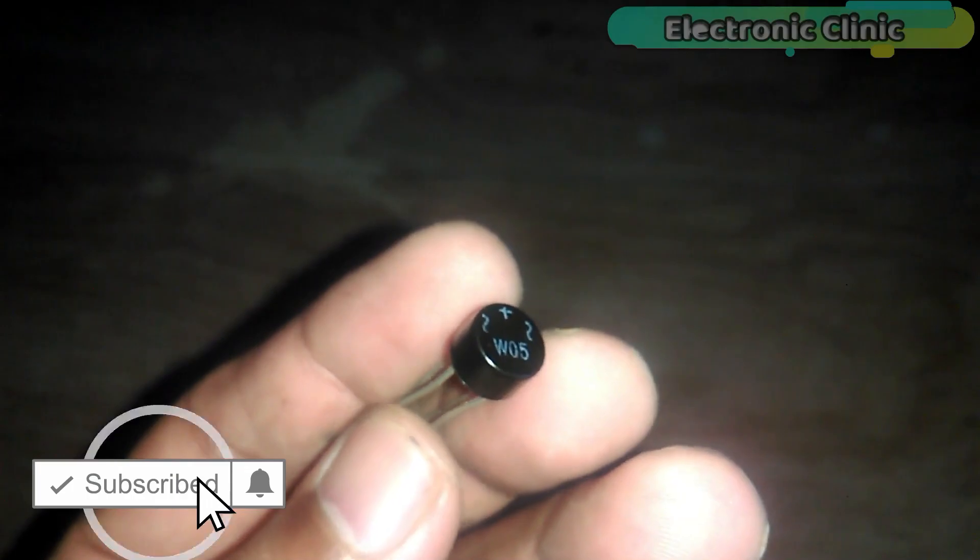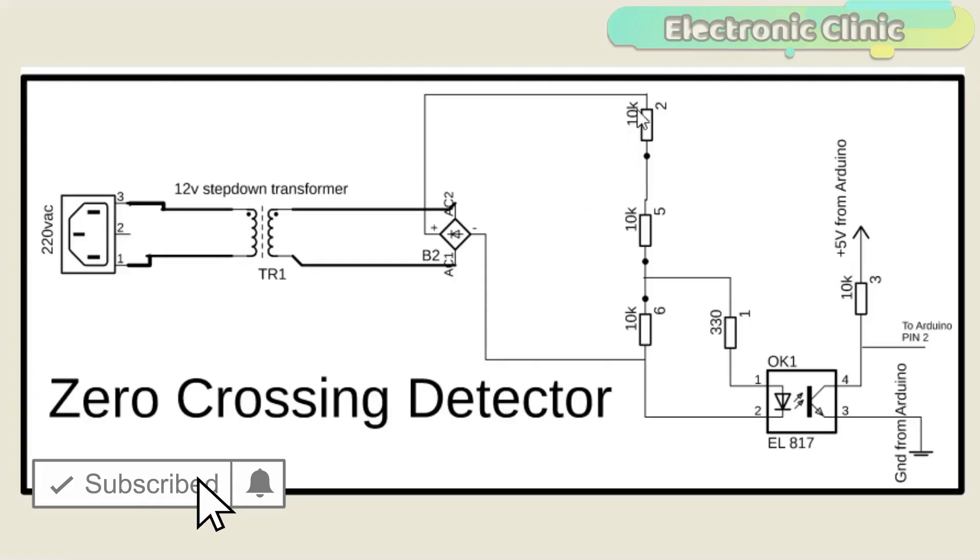Three 10K resistors are connected in series which makes the voltage divider circuit. With the help of these resistors the voltage is reduced to 4 volts. A 330 ohm resistor is connected in series with the IR LED of the EL817 optocoupler.